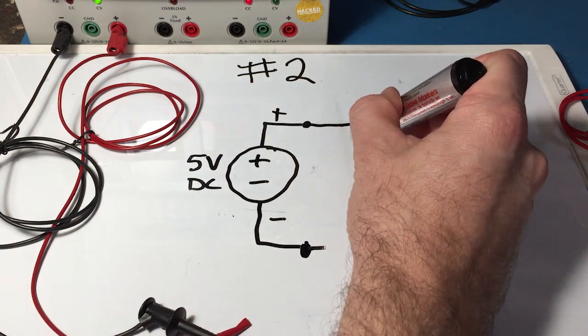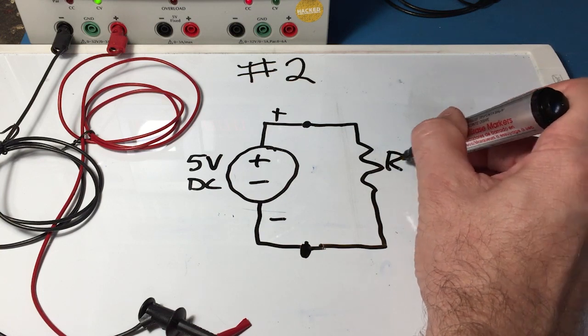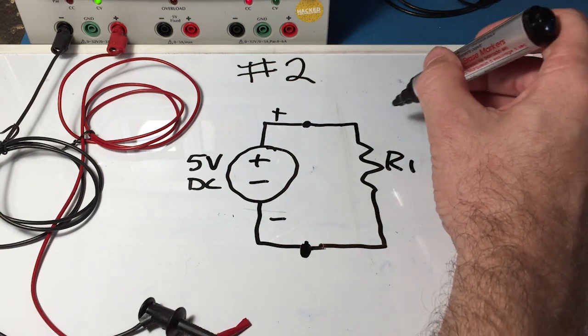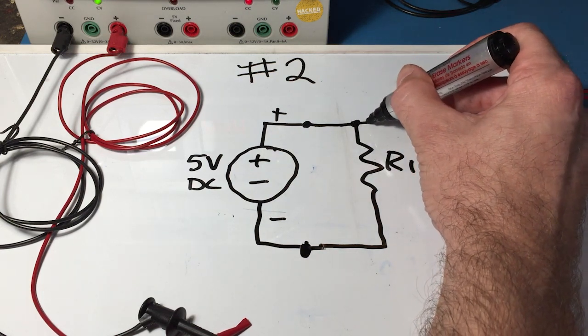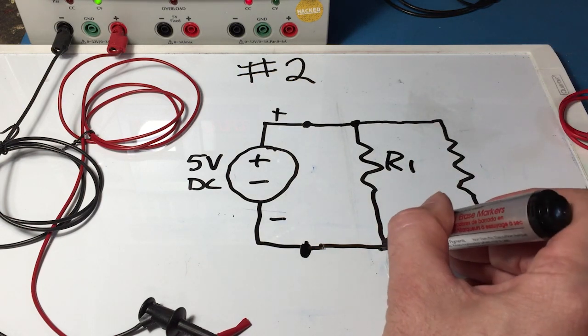We can draw those on our schematic. So we'll call this one R1. That's just a symbolic name for it. Then we have another resistor and this connection we call parallel.